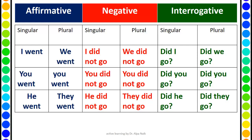For affirmative, remember we use the base verb form. So we know the past tense of 'go' is 'went'. So: I went, we went, you went, they went, and he went. Here you should know the correct past form of the verb.